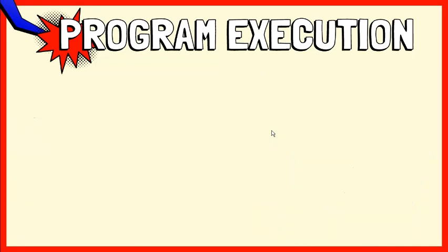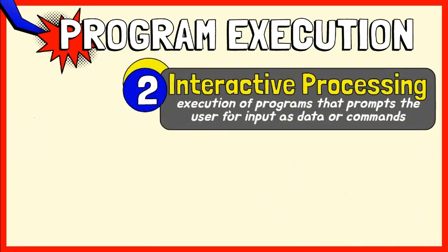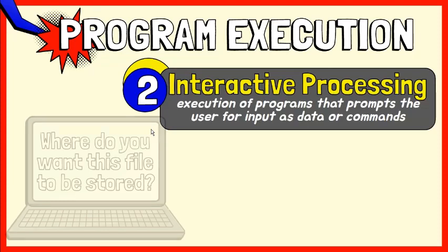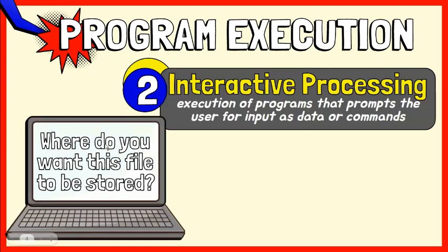On the other hand, interactive processing is the execution of programs that prompts the user for input as data or commands. The person needs to provide the computer with instructions while it is doing the processing. For example, the computer sends a screen message to the user asking where they want a file to be stored, then the user interacts with the computer to complete the processing.